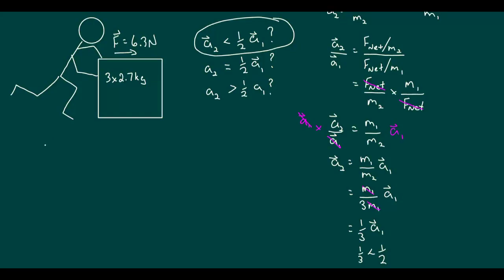Now we can also look at calculating the acceleration based on the values in our new situation. Using the second law equation and plugging in the values for the force and the new mass, 8.1 kilograms, we get an acceleration of 0.78 meters per second squared. Since our point of comparison is half the original, or 1.17 meters per second squared, our calculation bears out our algebraic reasoning.